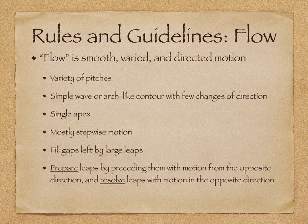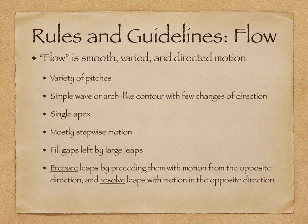To write a good line, it must have flow. Flow is the smooth, varied, and directed motion of a line. While you will discuss more rules in class, here are a few guidelines to get you started identifying and writing lines with good flow. Your line must have a variety of pitches. It should have a single wave or arch-like contour with few changes of direction. Typically, lines with a single apex and mostly stepwise motion have good flow.